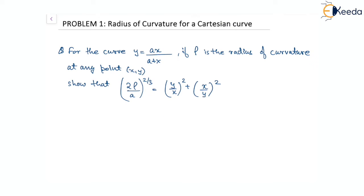The given question has the curve y = ax/(a + x). Let rho be the radius of curvature. At any point (x, y) we have to show that 2ρ/a^(2/3) = (y/x)² + (x/y)².